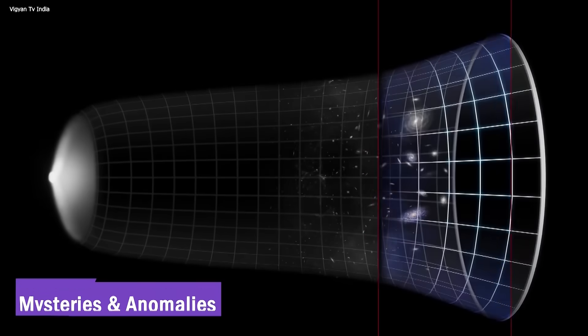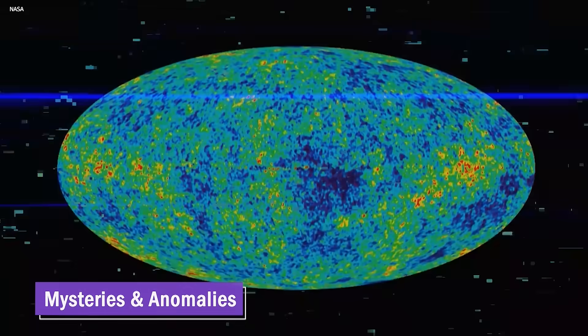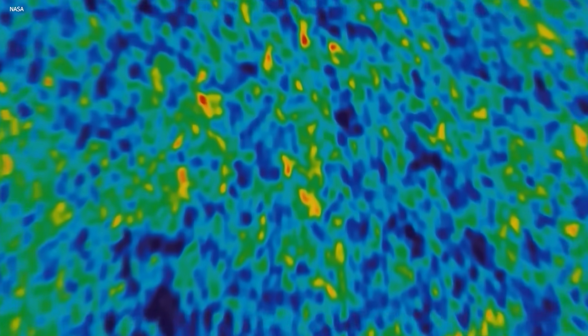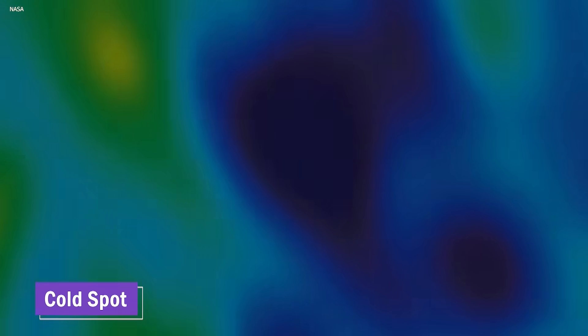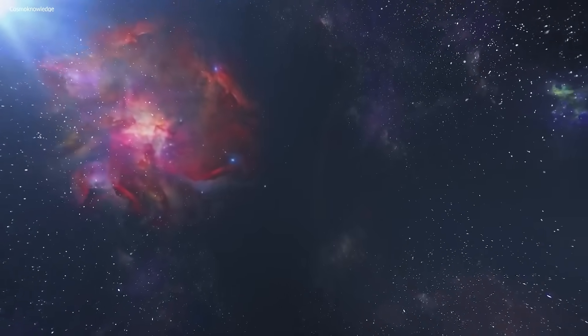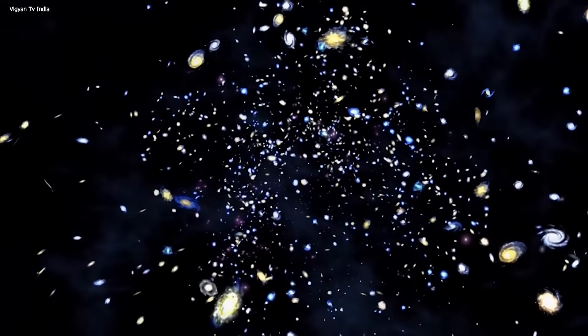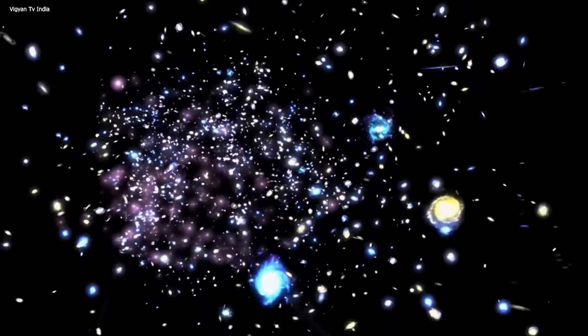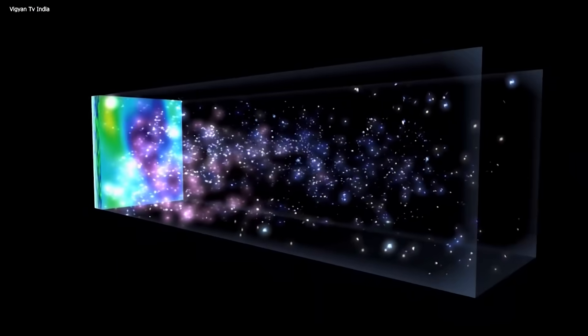One of these anomalies is the cosmic microwave background cold spot, which is a large and unusually cold patch on the CMB. The CMB cold spot is about 70 microkelvin colder than the average CMB temperature and appears in the southern celestial hemisphere.